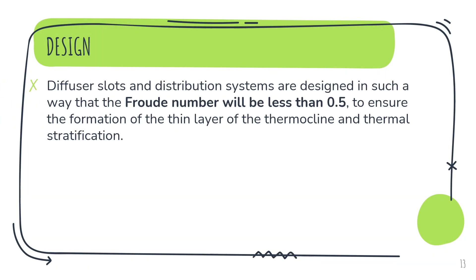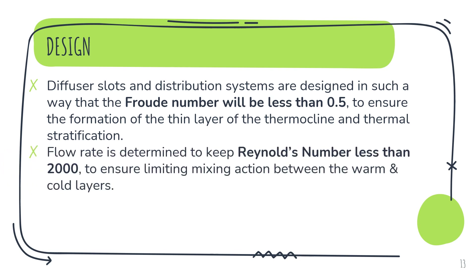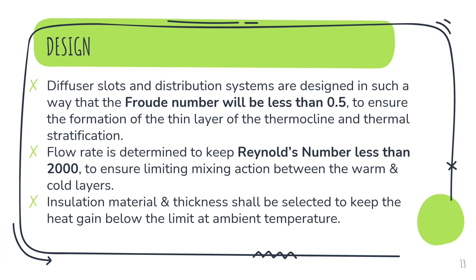Diffuser slots and distribution systems are designed such that the Froude number will be less than 0.5 to ensure the formation of a thin layer of thermocline and thermal stratification. Flow rate is determined to keep Reynolds number less than 2000, to ensure limiting mixing action between the warm and cold layers. Proper insulation material and thickness shall be selected to keep the heat gain below the limit at ambient temperature.